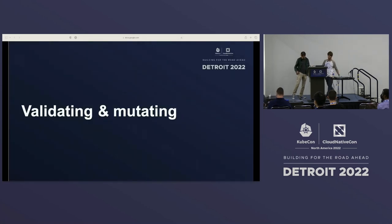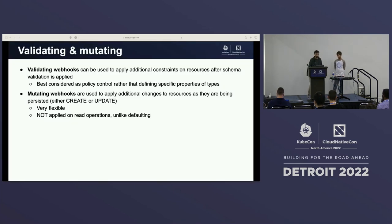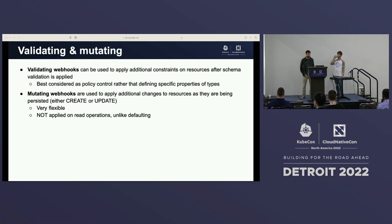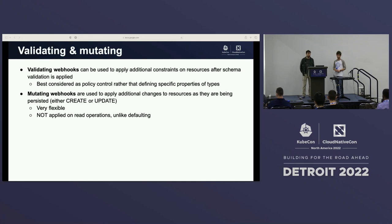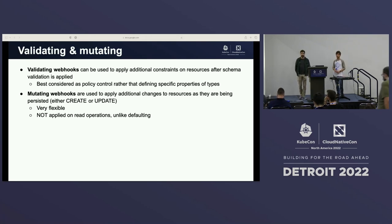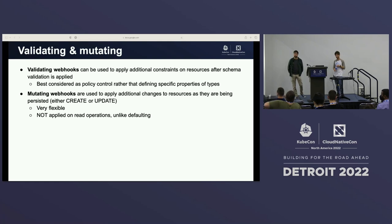Conversion is one aspect of the resource lifecycle, but we also deal with validating and mutating webhooks. Validating webhooks are generally used to apply additional constraints which cannot be expressed in the OpenAPI specs for CRDs. For instance, even if we really advise not to do that, the state of some fields might be valid depending on what other properties are set on the CRD — there's no good way to do that with the schema itself. So at times, this is something people need to resort to.